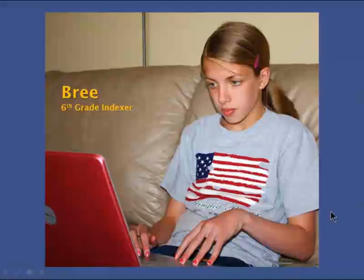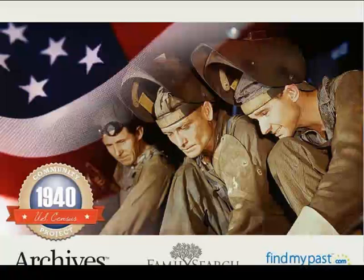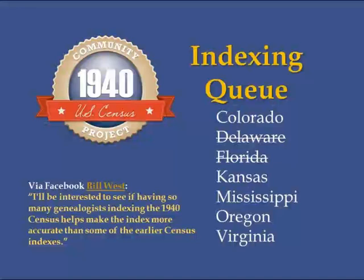Moving on, Jim Erickson is pulled into the conversation to discuss FamilySearch, Archives.com, and the community indexing effort. The host asks about Delaware's status. Jim confirms Delaware is essentially complete from an indexing and arbitration perspective — it's now going through an audit process with spot-checking to ensure everything is in order. Once complete, the index will be shipped to partners and also posted by FamilySearch directly.